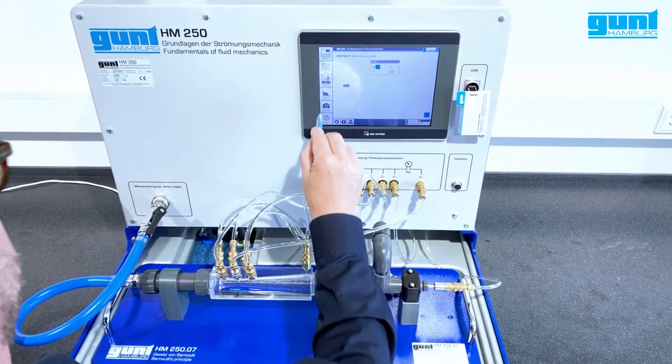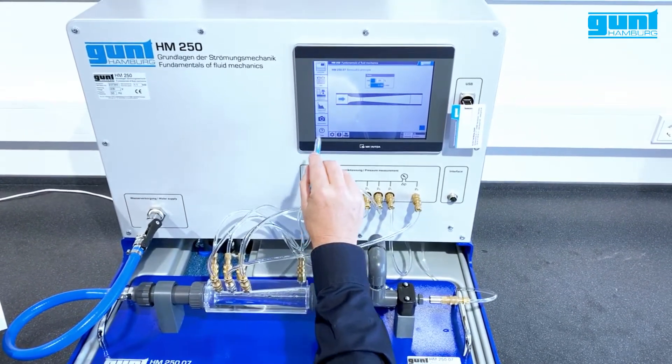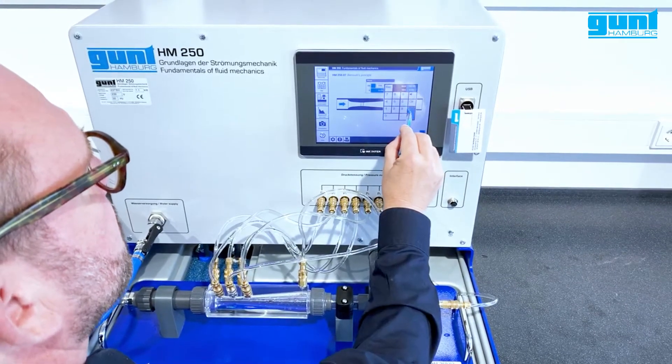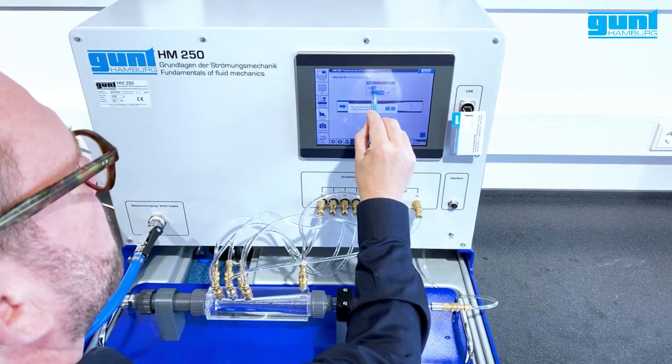To start the experiment, we choose Experiment Overview from the menu on the left. Now we can adjust the pump capacity and switch the pump on.